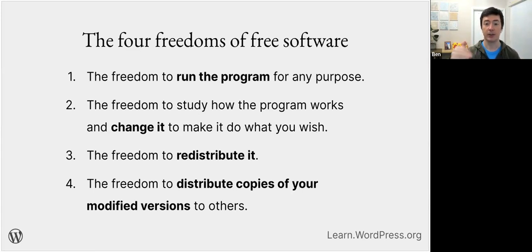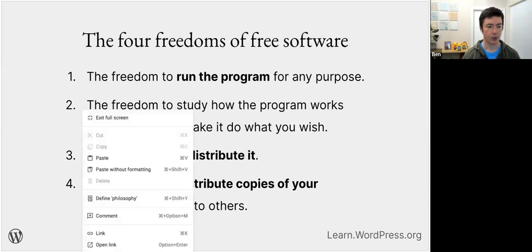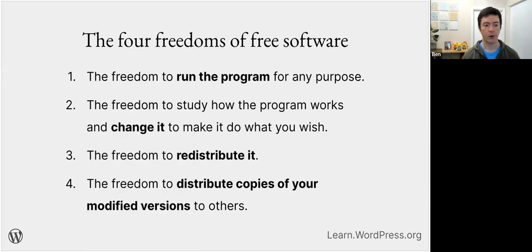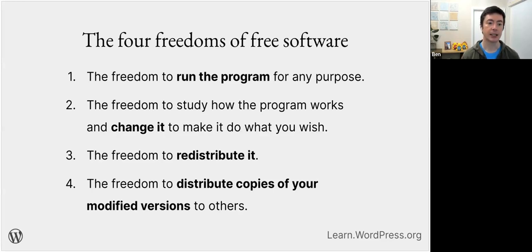So the four freedoms are: the freedom to run the program, the freedom to change the program, the freedom to redistribute the program, and the freedom to distribute copies of your modified versions to other people. We'll be looking at these four freedoms specifically in relation to the WordPress project in further slides. You can find more information at the GNU license website.